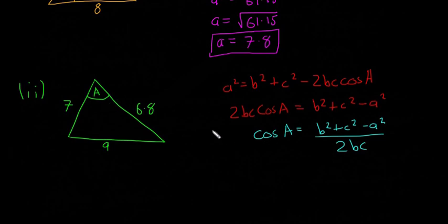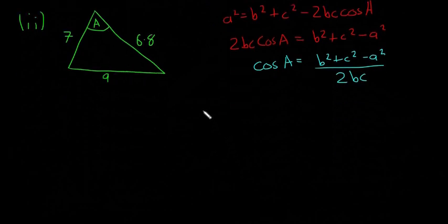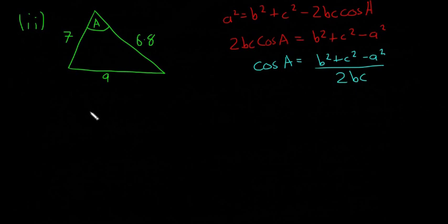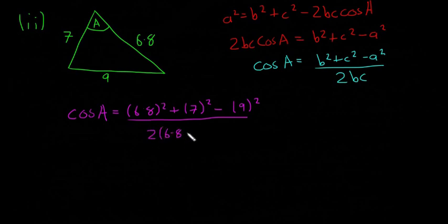So it doesn't matter which side b and c is, it just matters that this one here, number 9, is a. So I will scroll down a little bit more space. So that means cos A is going to be equal to, we'll say 6.8 is b, so 6.8² + 7² - 9², all over 2(6.8)(7).